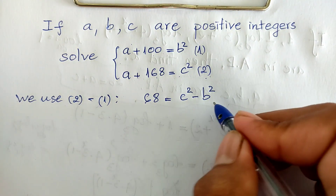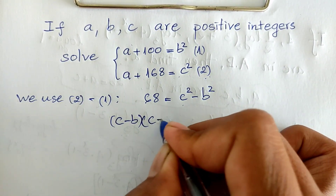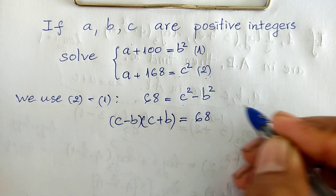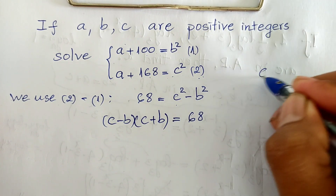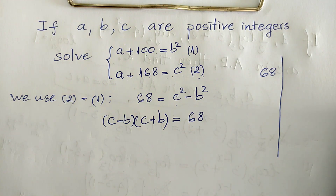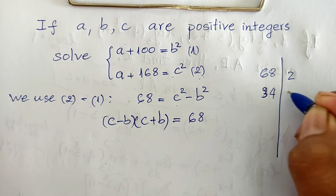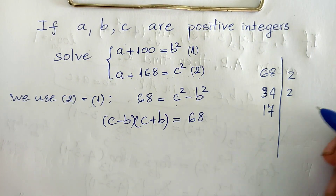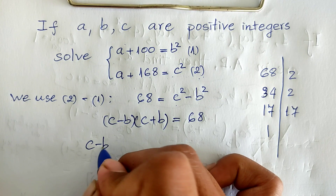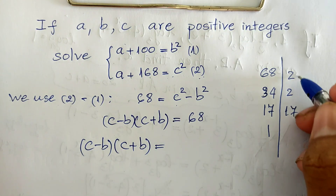Now we can use the difference of squares rule: c minus b multiplied by c plus b equals 68. Now 68 can be divided into prime factors. Dividing by 2 we get 34, divide by 2 we get 17, and divide by 17 we get 1. So 68 equals 2 squared times 17.